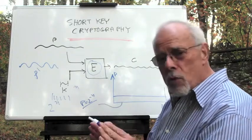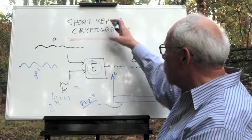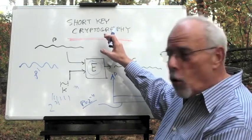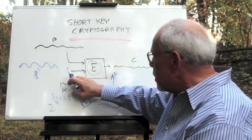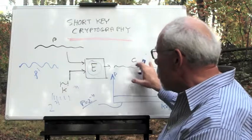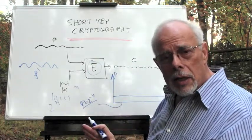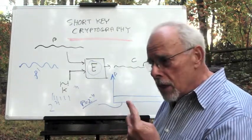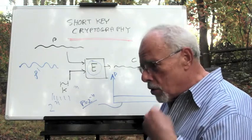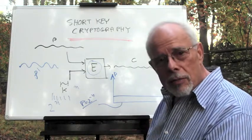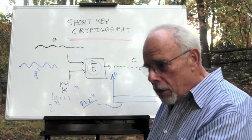So in other words, all short key cryptographies, all of them, just because this is short and this is long and this is long, are breakable. Because all that we have to do is go through the keys one by one and find the one that was actually used.